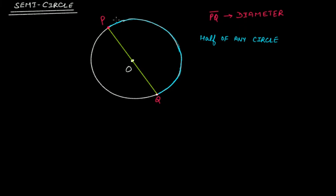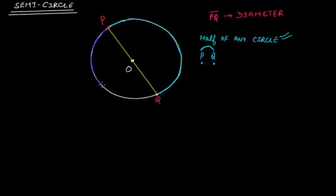The boundary of this semicircle will be P and Q, the endpoints of the diameter we are considering. P and Q are the endpoints of the diameter, and the portion of the circle between these two points will be called the semicircle. A semicircle is always half of any circle — this is one half portion, and this is the next half portion.